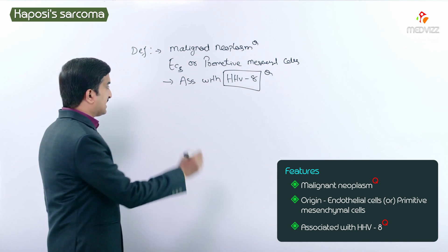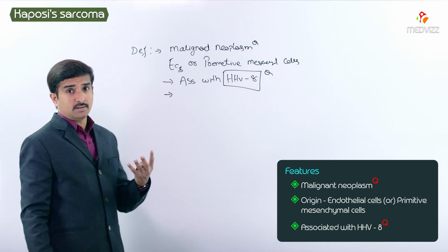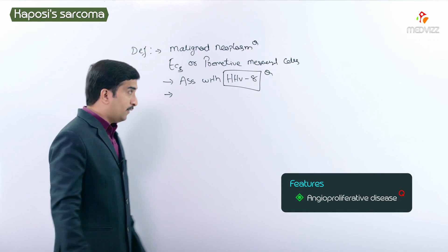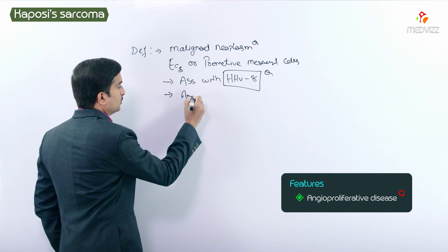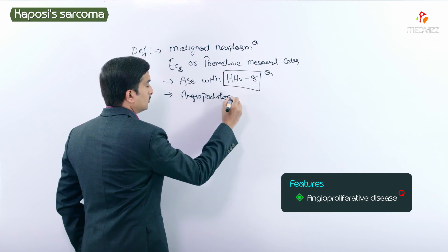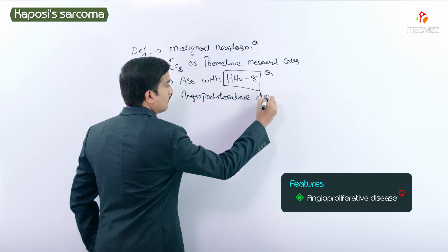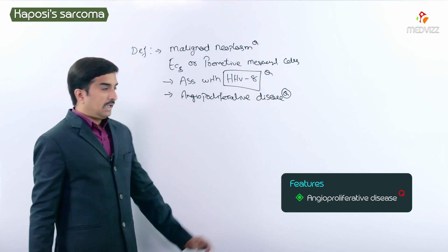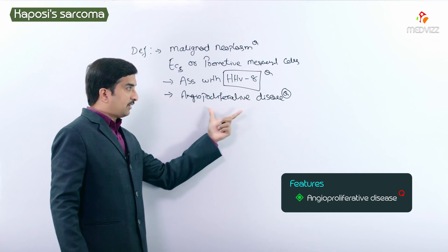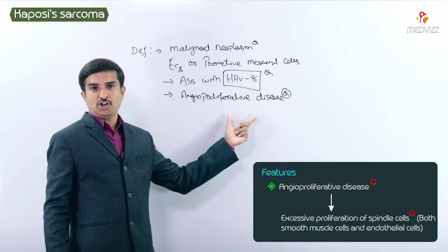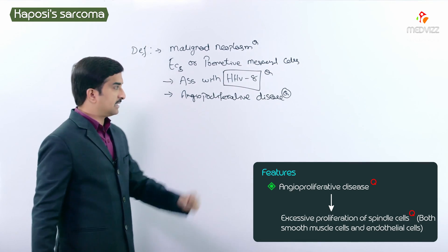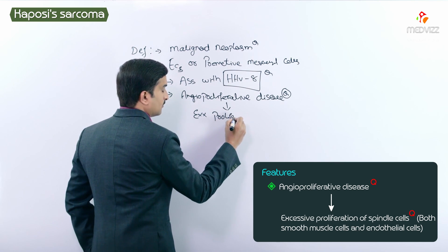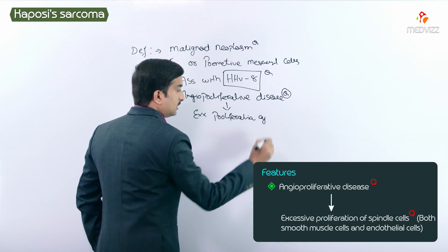We are discussing Kaposi sarcoma under vascular neoplasms because it is an angioproliferative disease. It is an angioproliferative disease characterized by excessive proliferation of spindle cells.